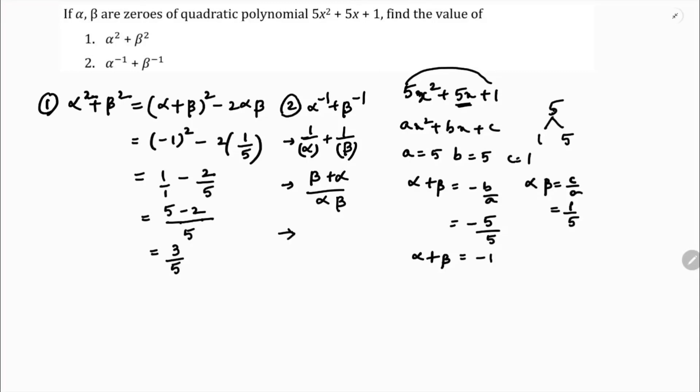Alpha plus beta is minus 1 and alpha into beta is 1 by 5. So minus 1 into 5 by 1, the answer is minus 5. Alpha square plus beta square is 3 by 5, and alpha power minus 1 plus beta power minus 1, the answer is minus 5.